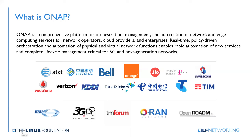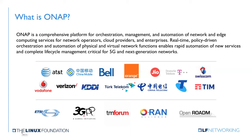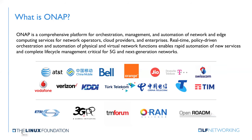ONAP has tremendous momentum. The end-user contributors on ONAP represent over 70 percent of worldwide mobile subscribers. It was kicked off by AT&T, China Mobile, and others, and since then Bell Canada, Orange, Jio, Deutsche Telecom, Swisscom, Vodafone, Verizon, KDDI, Turk Telecom, China Telecom, Telstra, and Telecom Italia have also joined as contributors. Another key point about ONAP is it is highly aligned with open standards development organizations — ETSI as a pioneer in NFV, 3GPP on all 5G efforts, TM Forum on northbound APIs, O-RAN Alliance for managing virtual RAN, and Open ROADM in terms of optical networking.